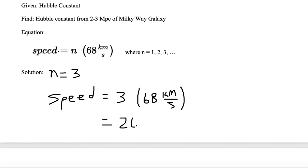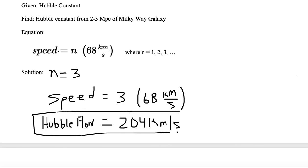So the answer is 204 kilometers per second between n equal to 2 and n equal to 3, so in between 2 and 3 megaparsecs. We can call this speed the recessional velocity, or you can just call it the Hubble flow. We are looking at the flow of space as it's moving away from us between the distances of 2 and 3 megaparsecs, and that flow is 204 kilometers per second.